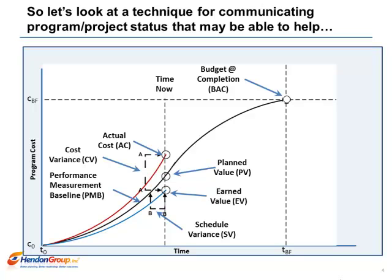I think it is much more useful to calculate scheduled variance by comparing the duration or date at time now with the duration or date when the value of work was planned. It is much easier for an executive to look at line B on this chart and see that the program is 30 days behind, 60 days behind, etc.